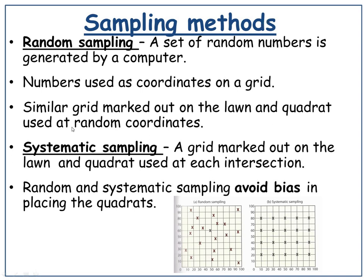There's also systematic sampling, which I'll go through next lesson, which is usually transects — measured at regular intervals. Both random and systematic sampling are all about avoiding bias in placing the quadrats. Because if not, you could just think, 'oh, there's loads of daisies over there, I'll just go and place my quadrat there.' But that's not really a fair representation of what the field actually is like.